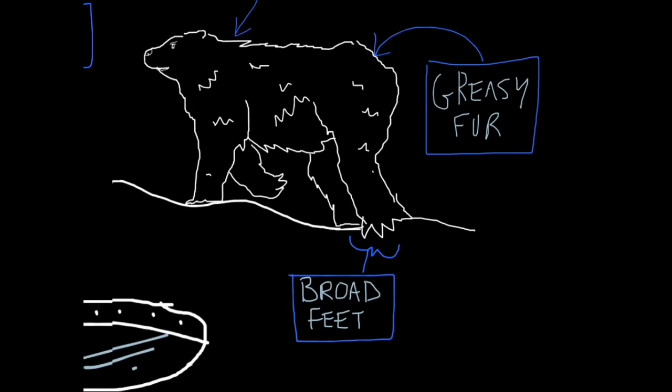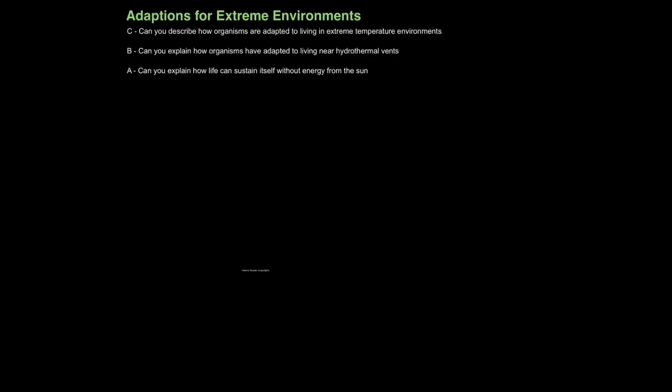Many arctic animals also have greasy fur. This means if they get wet after swimming, the water literally sheds off, so it reduces heat loss through evaporation. You know, imagine splashing water on your face and running around the arctic. Your face would freeze. If you had very greasy skin, that water would drip off, and that would avoid that freezing sensation. So that is how you can describe how organisms are adapted to living in extreme temperature environments.